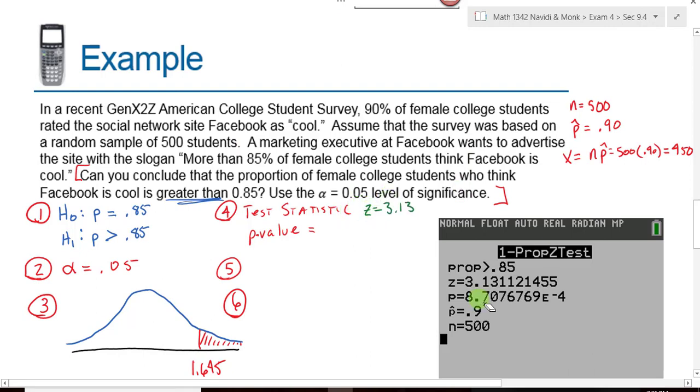So my p-value has this e negative 4 in it. Remember that scientific notation, which means I need to move that decimal four places, which gives me three zeros. So that's 0.0009. Because the number after the 8 was a 7, we round that 8 up to a 9. So my test statistic is way out here, 3.13.